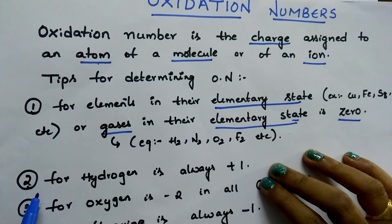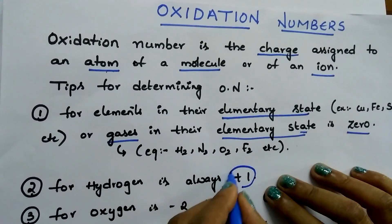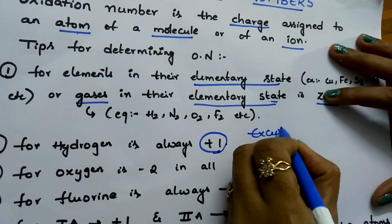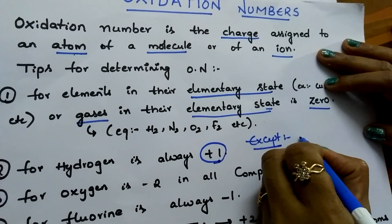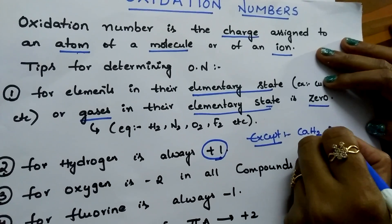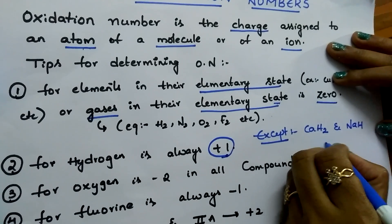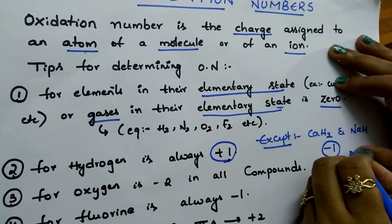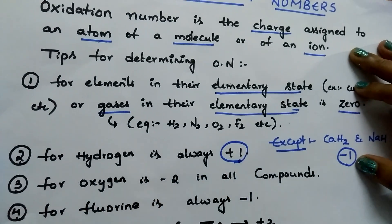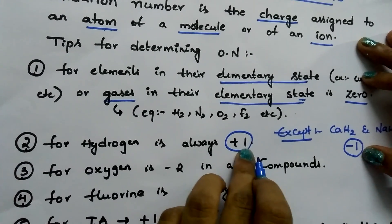This is tip number 1. Now, coming to tip number 2. For hydrogen, the oxidation number is always plus 1. Except in metal hydrides like CaH2 and NaH, the oxidation number of hydrogen is minus 1. Keep it in mind, this is important. Except for these types of metal hydrides, for all remaining elements, the oxidation number of hydrogen is always plus 1.